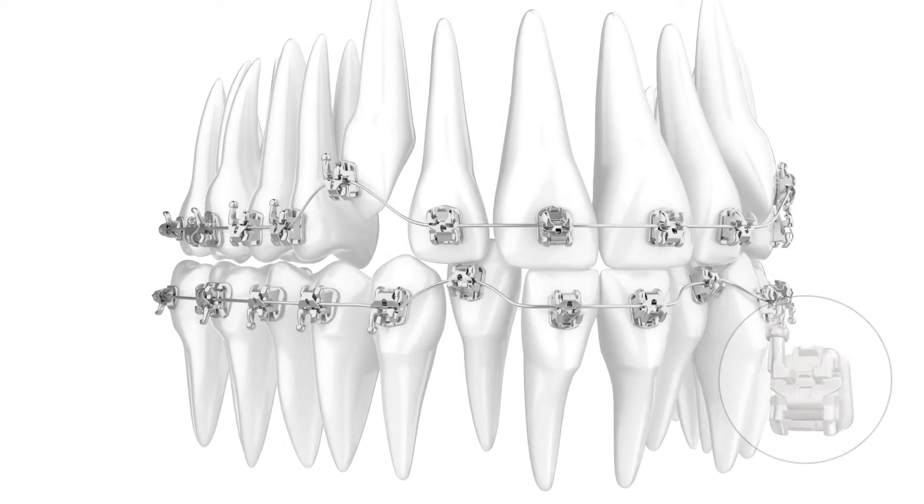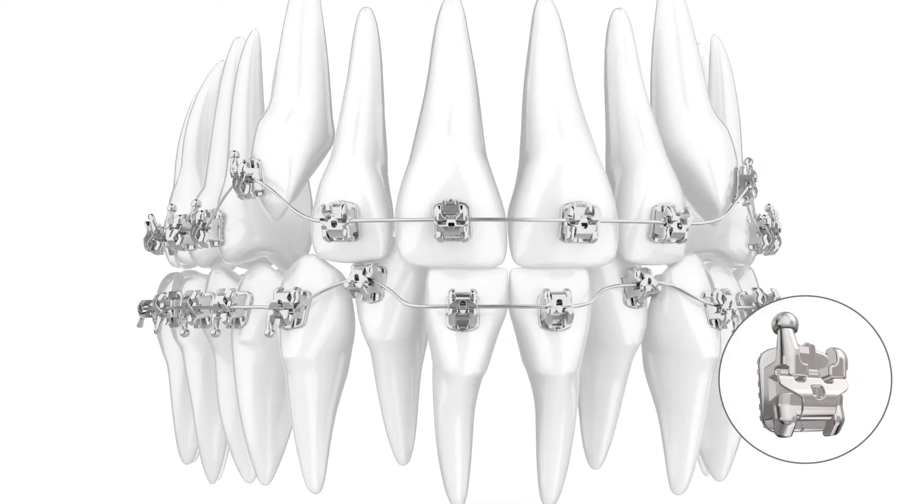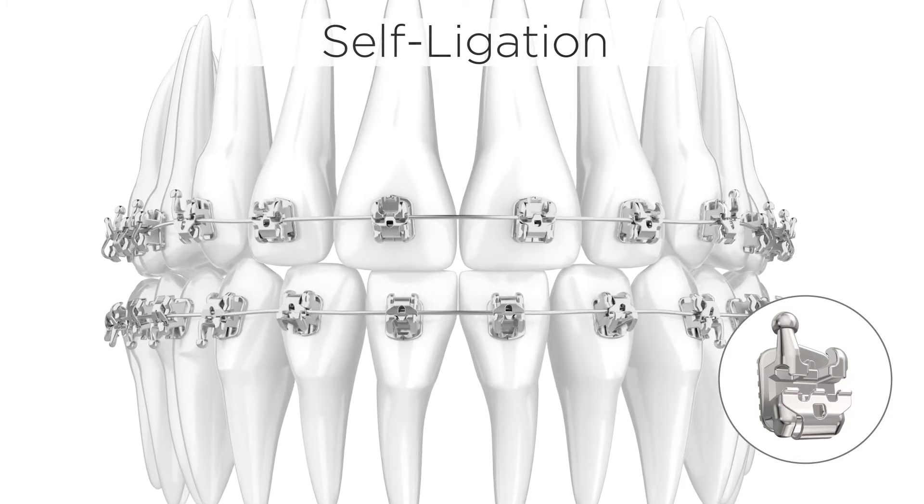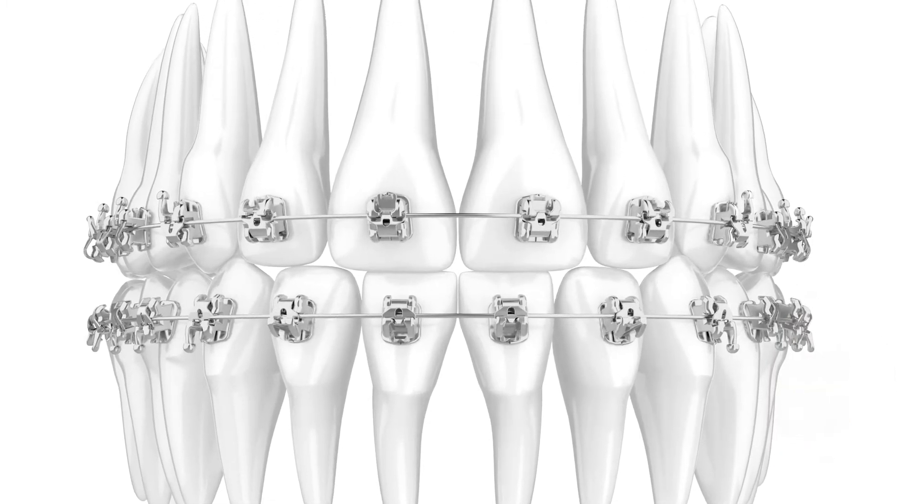This unique system uses a built-in clip door to hold your arch wire in place. This integrated clip design, known as self-ligation, gives you benefits beyond what you'd get with traditional braces.